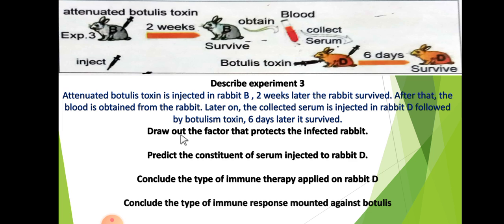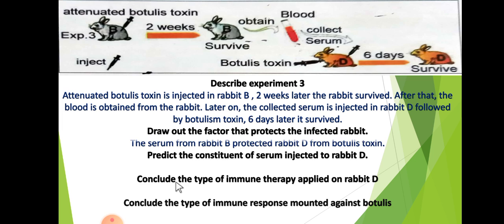Indicate without justification the factor that protected the infected rabbit — the one we injected with bottlis toxin. What protected it and made it survive? The serum from Rabbit B protected Rabbit D from bottlis toxin.